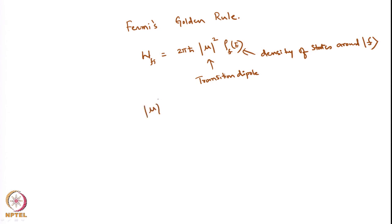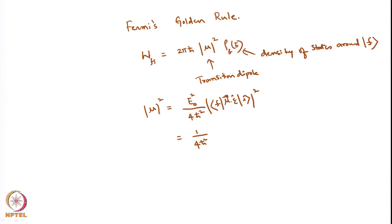Where |μ|² was given by E₀² / (4ħ²) |⟨F|ε·μ|i⟩|², which can also be written as (1/4ħ²) |⟨F|E·μ|i⟩|², where E = E₀ε is the electric field. Rewriting for states 1 and 2: W21 = (2π/ħ) |μ21|² ρ₂(E), where |μ21|² = (1/4ħ²)|⟨2|E·μ|1⟩|².